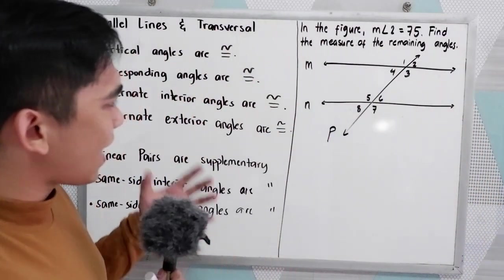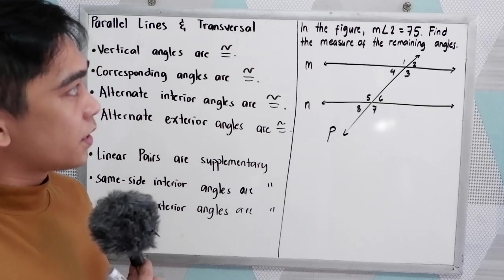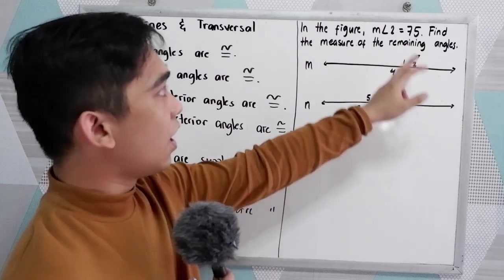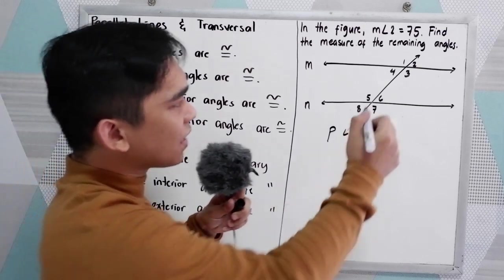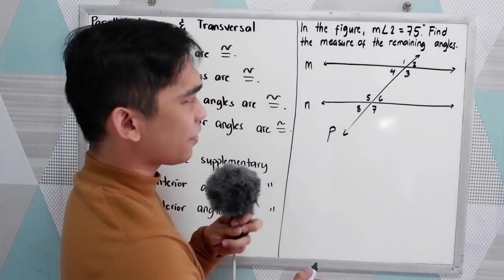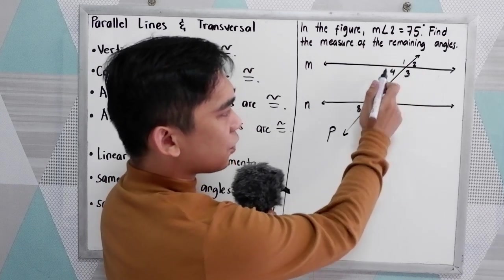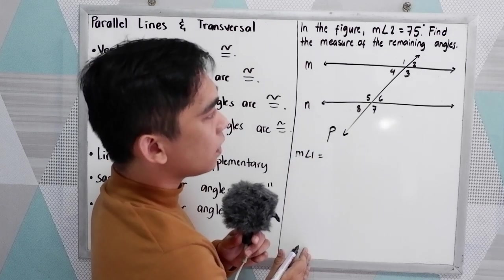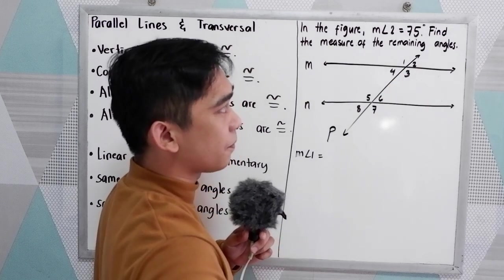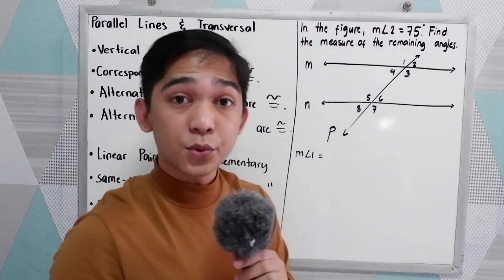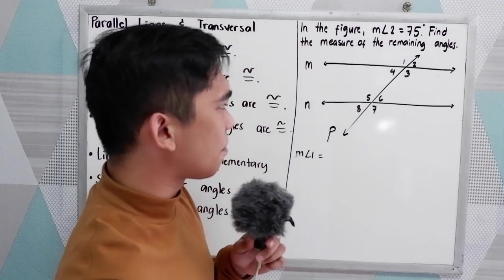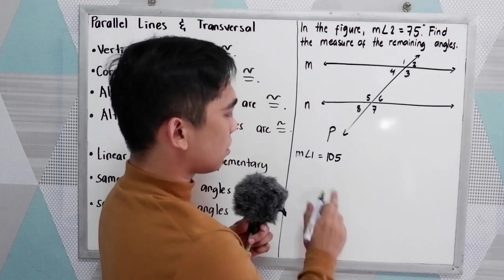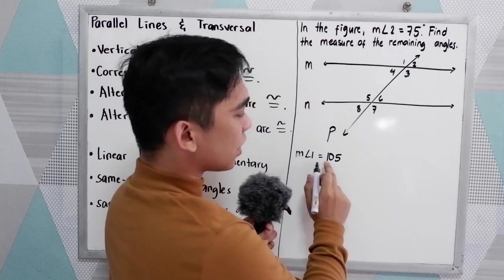To apply our postulates, theorems, and definitions, let's use this figure. In the figure, measure of angle 2 is equal to 75 degrees. Find the measure of the remaining angles. So angle 2 is 75 degrees — that is the given. Let's start with measure of angle 1. We know angle 1 and angle 2 are a linear pair, so their sum equals 180 degrees. 180 minus 75 equals 105. So measure of angle 1 is equal to 105 degrees.